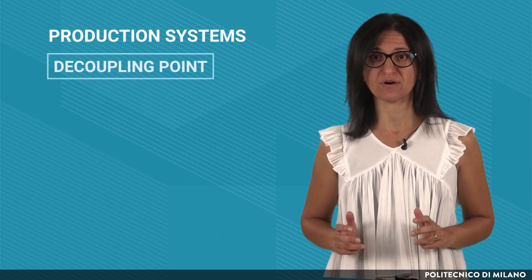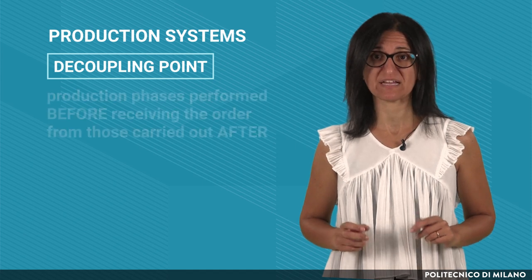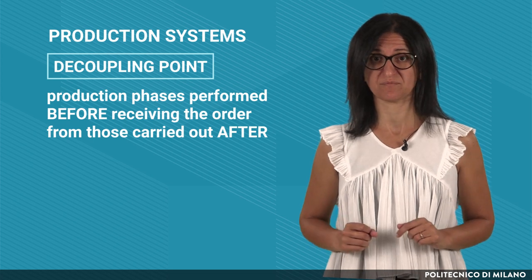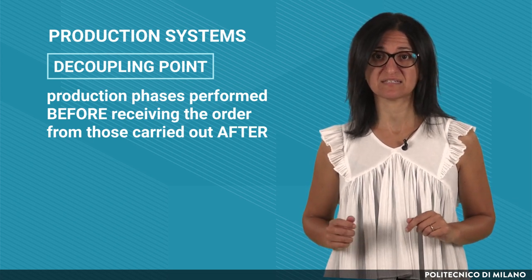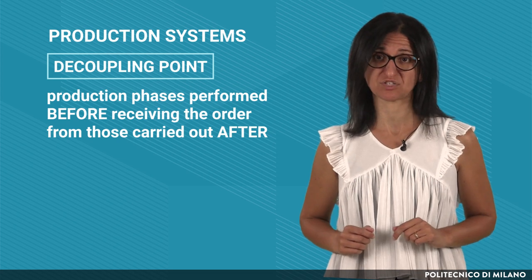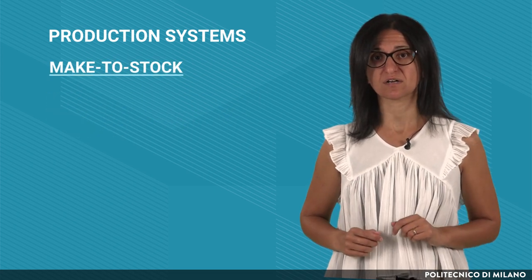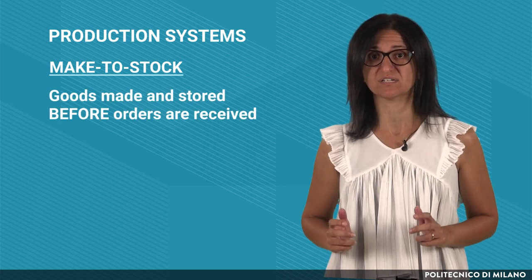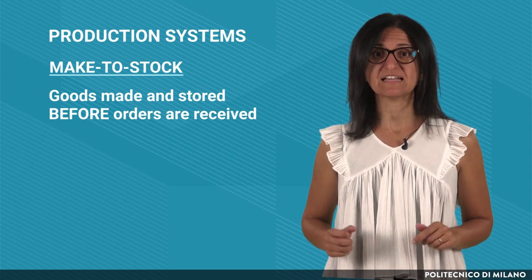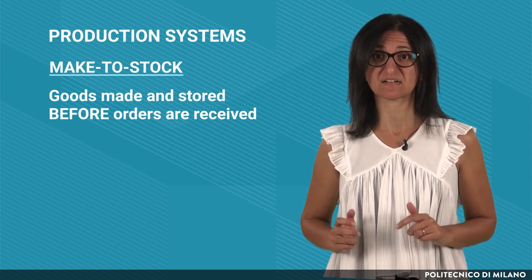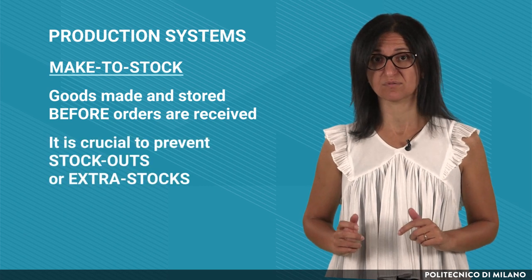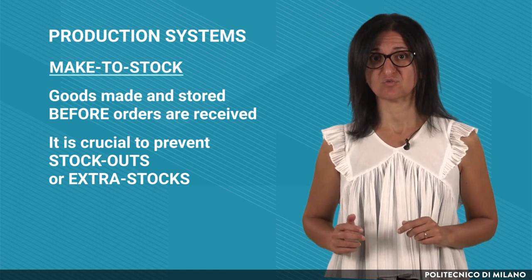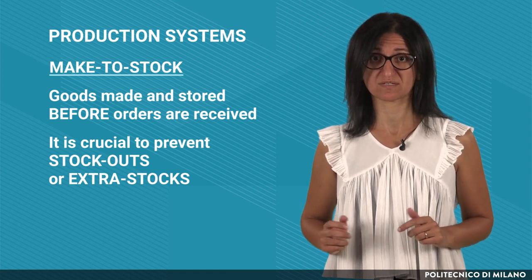More in detail, the decoupling point separates the production phases performed before receiving the order from those carried out after. Based on the decoupling point, we can distinguish five types of production systems. In a make-to-stock production system, the goods are made and stored before customer orders are received. It is therefore crucial to be able to forecast customer demand in order to prevent stock-outs that lead to poor customer service, or extra stocks that lead to high inventory holding costs for the company.